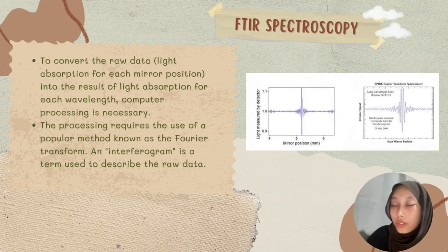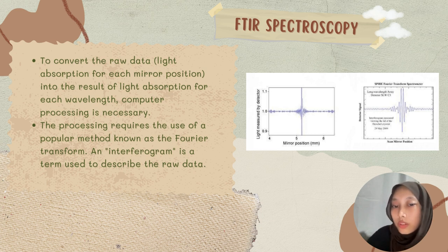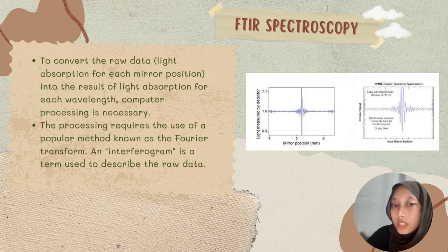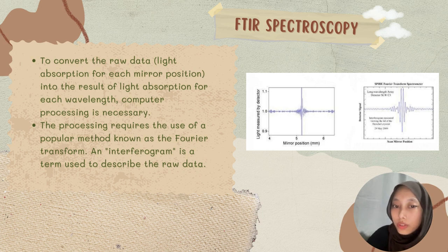Different wavelengths are modulated at different rates, so the beam coming out of the interferometer has a distinct spectrum at any given time. To convert the raw data — light absorption for each mirror position — into the result of light absorption for each wavelength, computer processing is necessary. This processing uses a popular method known as the Fourier transform; the raw data is referred to as an interferogram.